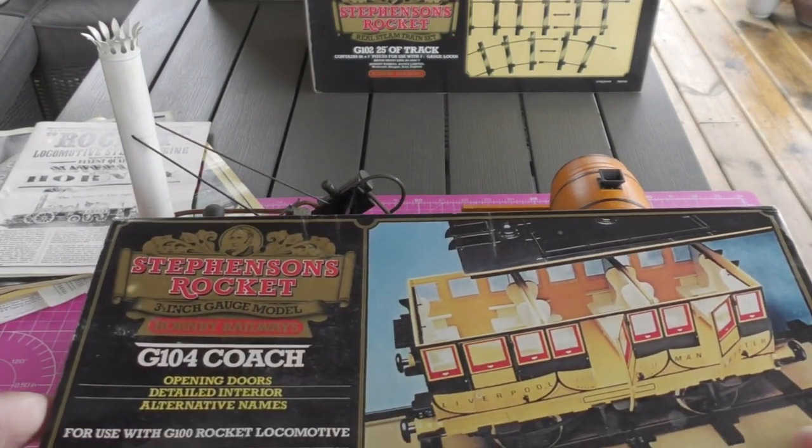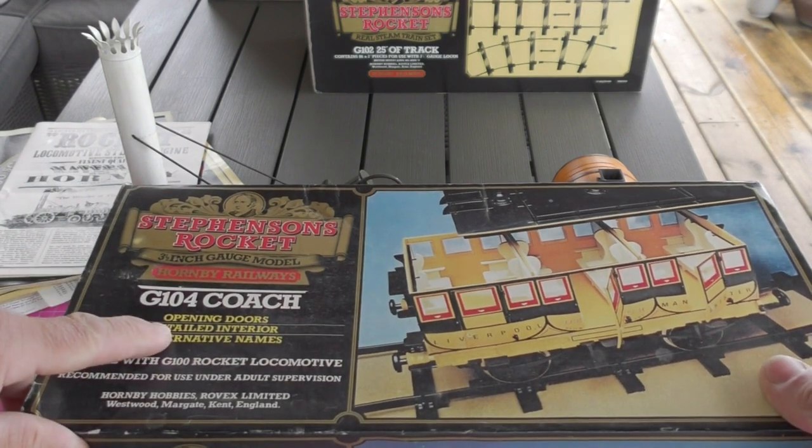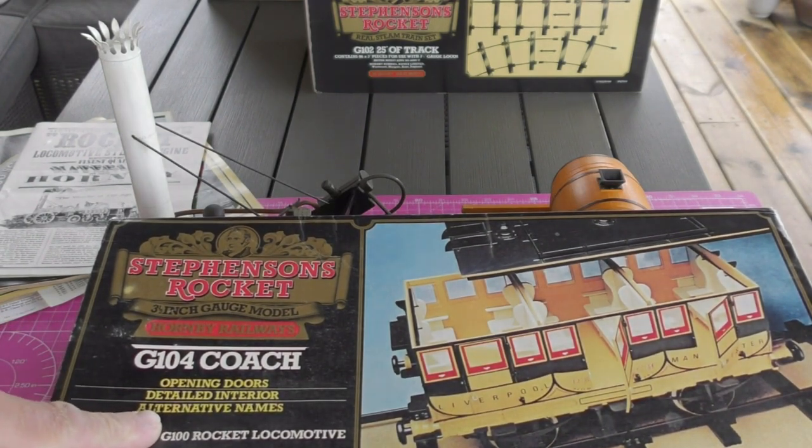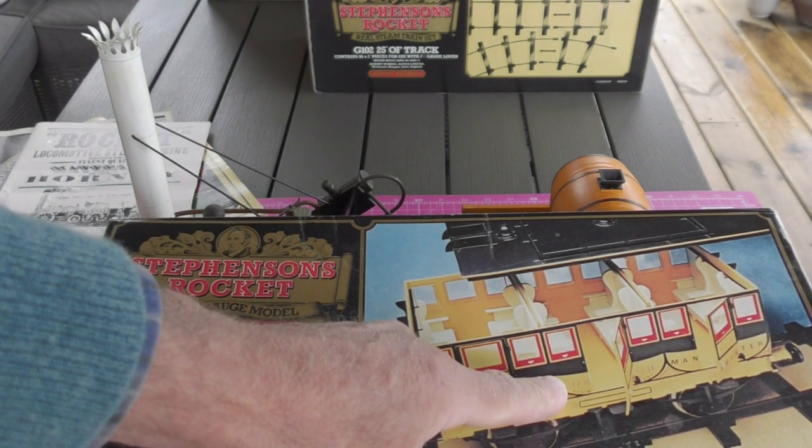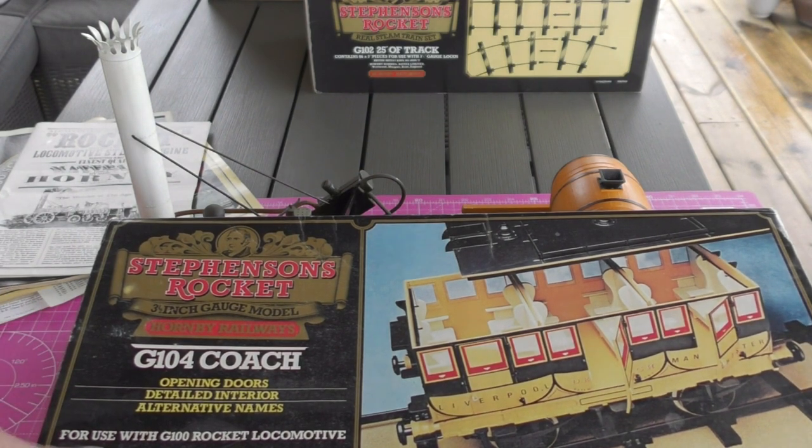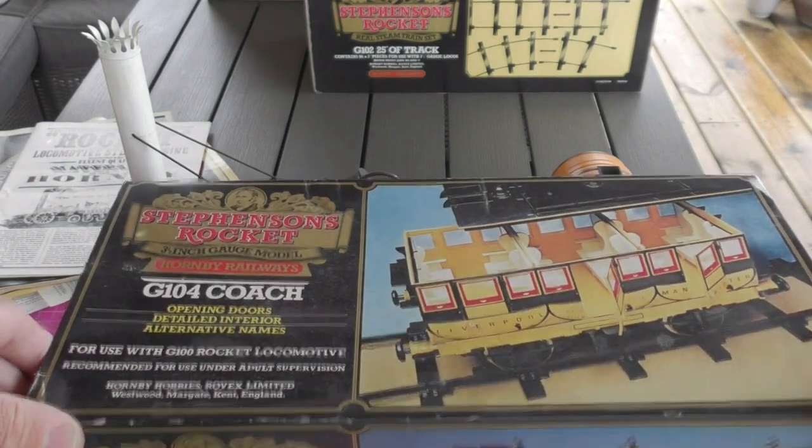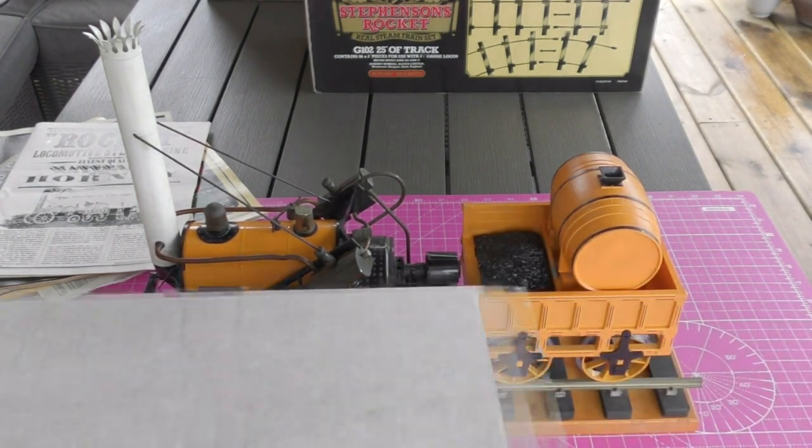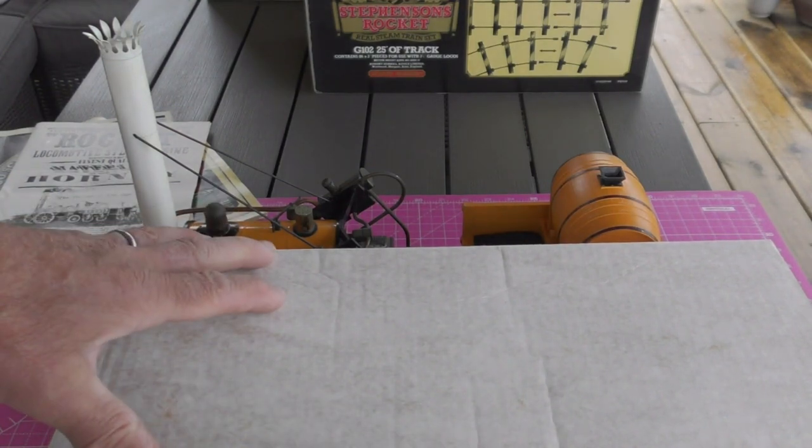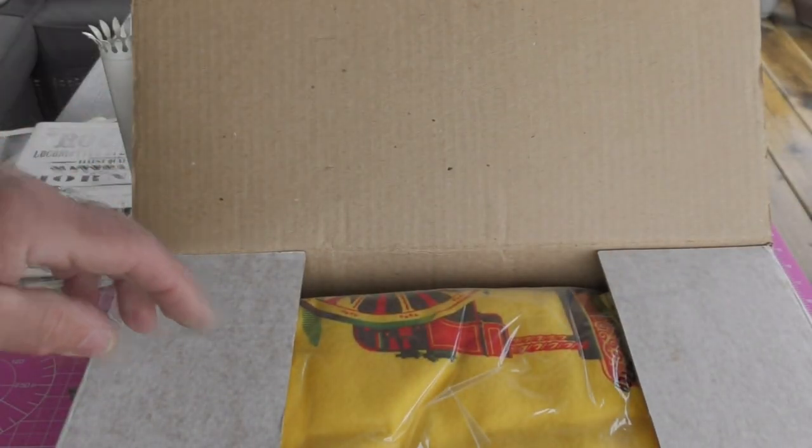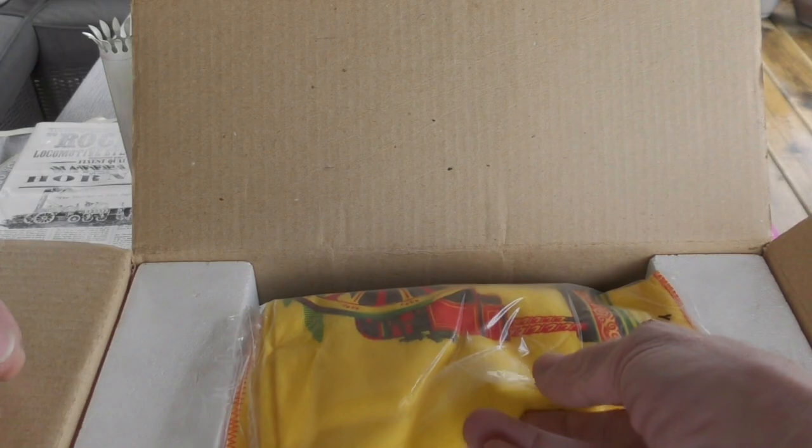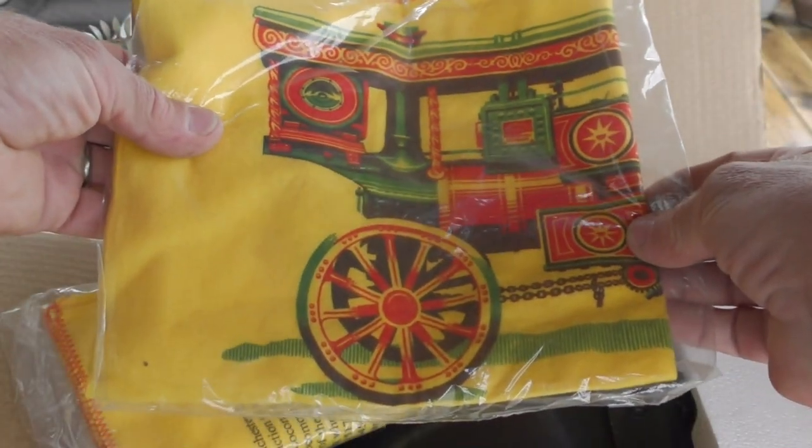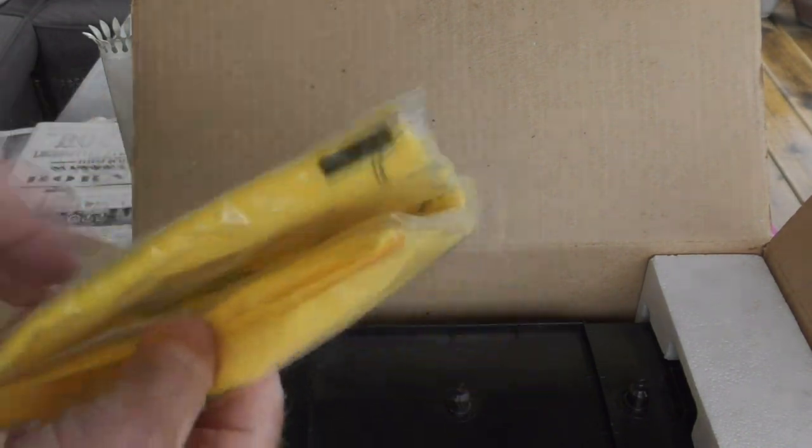G104 coach, it says opening doors, detailed interior, alternative names. I think we know on the Triang model we've got Times, Endurance, third name seems to escape me at the moment. Recommended for use under adult supervision, so I'll probably have to go and find a responsible adult at some point. Let's see if I can slip this out. We've got a white cardboard interior. These don't actually look like Hornby issue items. Quite nice yellow duster there of a traction engine.